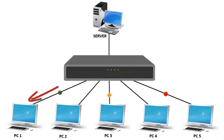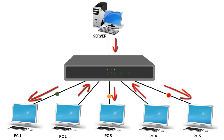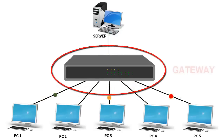Similarly, PC2 is sending data to PC3, and PC4 is sending data to PC5. All this data travels through the centralized device switch. Like this, the switch is acting as a gateway that enables traffic to flow in and out of the network.